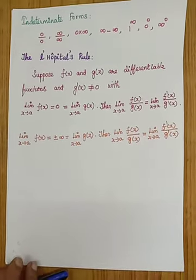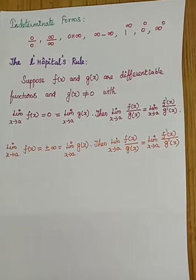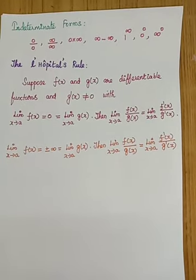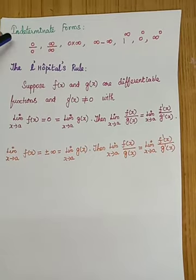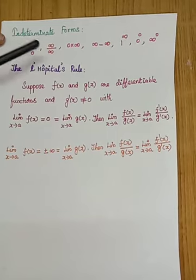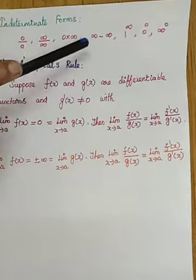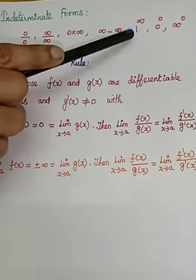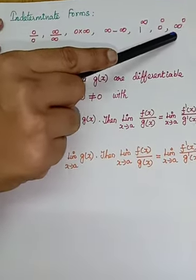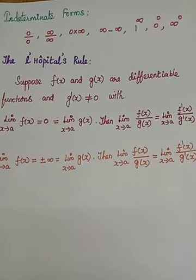Good morning students. Today our topic is: what are indeterminate forms, and how to evaluate them? Indeterminate forms are 0/0, ∞/∞, 0×∞, ∞−∞, 1^∞, 0^0, and ∞^0. These are called indeterminate forms.